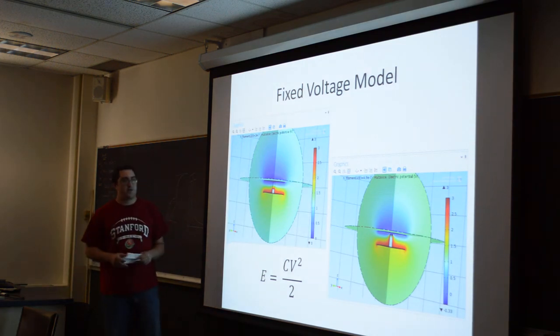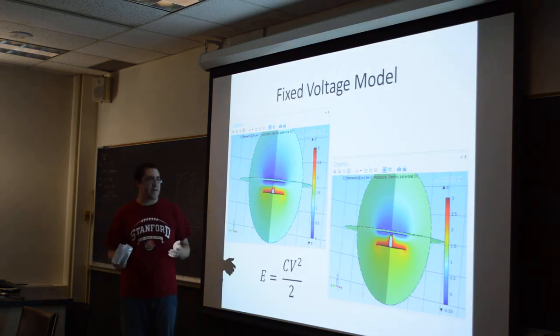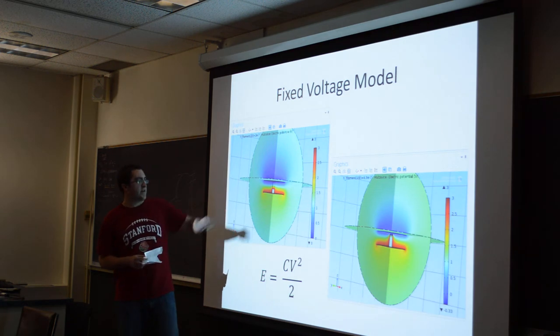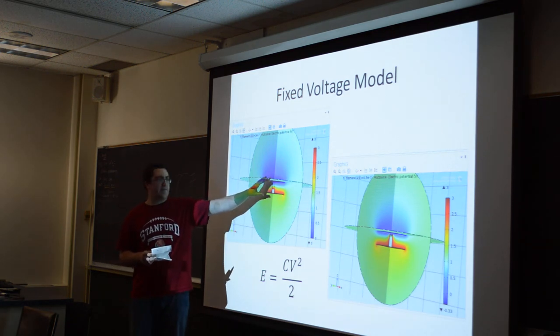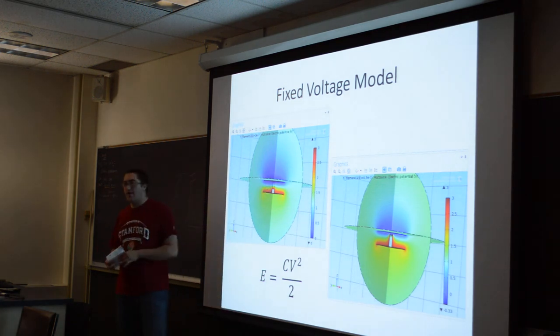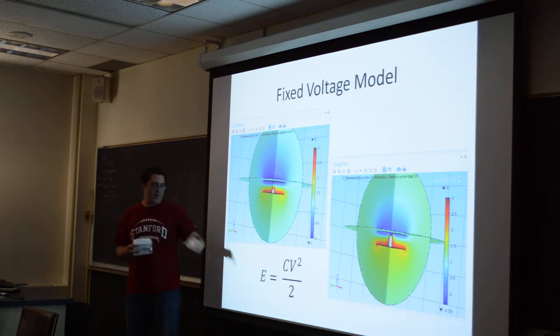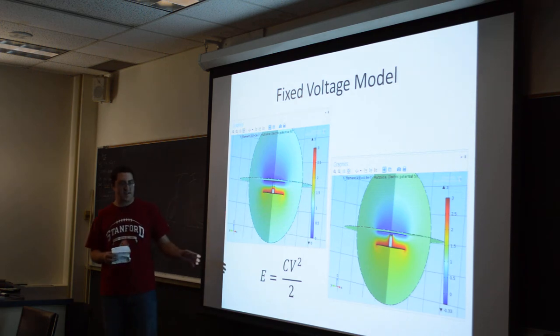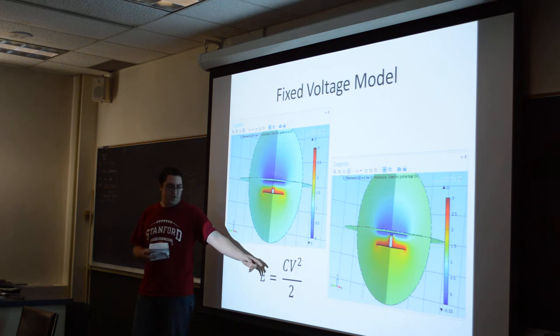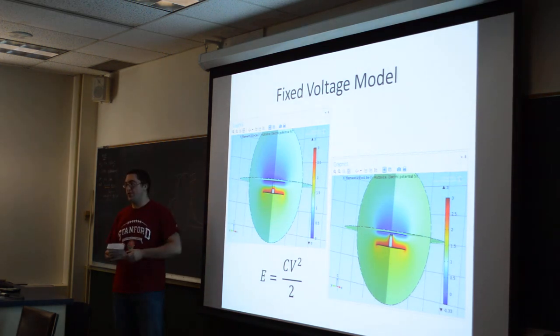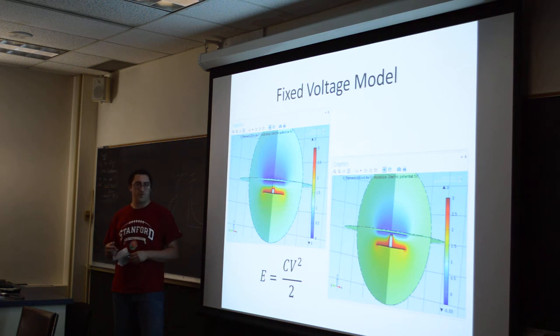The next model is the fixed voltage model. Everything is exactly the same as the fixed charge model, except that I have a set fixed voltage between the plates. When we set the voltage fixed, we expect the total energy to behave according to this equation. It's the exact same equation as in the previous model, except we've replaced the charge Q with CV, and now the capacitance is in the numerator. As we increase the filament height, we're going to increase the capacitance, and therefore we expect an increase in total energy.